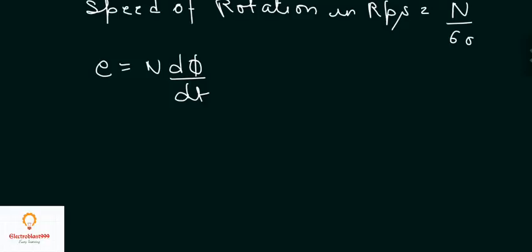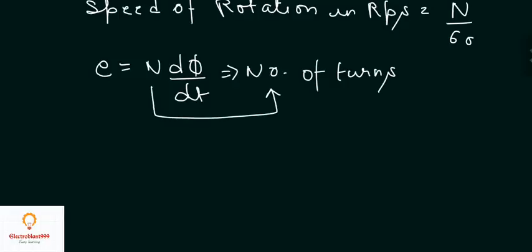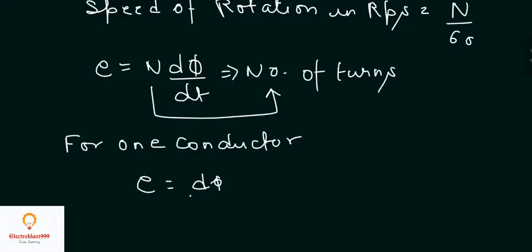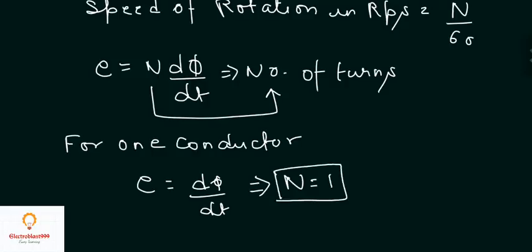Here N is the number of turns — note that this N (number of turns) is different from the N representing speed of rotation in RPM. For one conductor, the EMF is simply d-phi by dt, where the number of turns N equals 1.